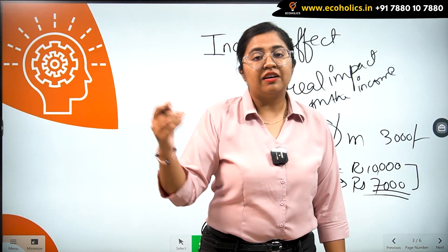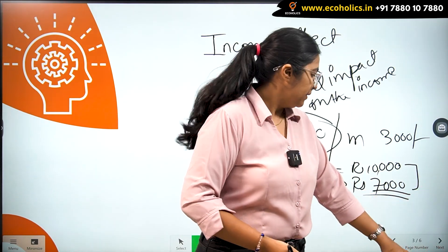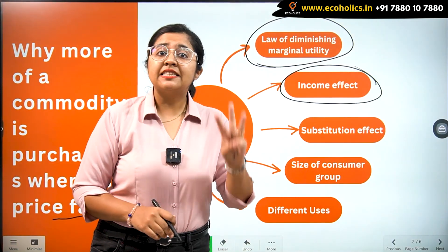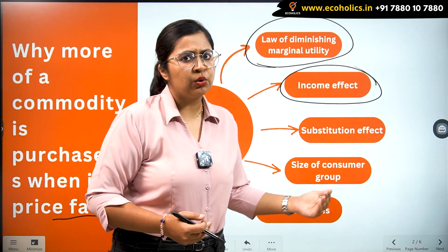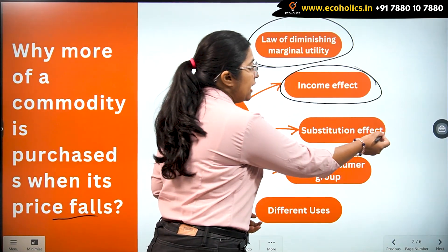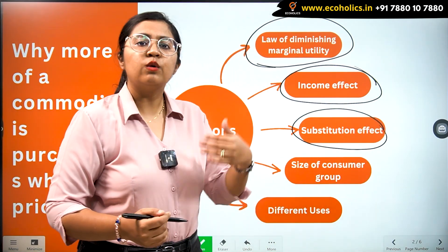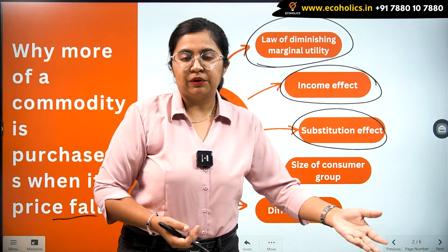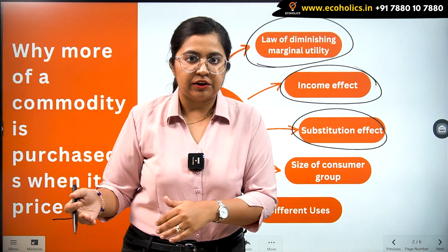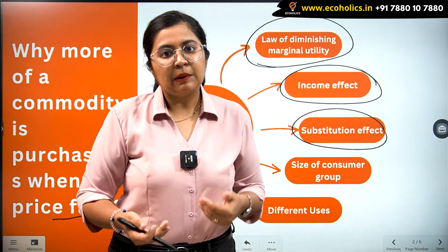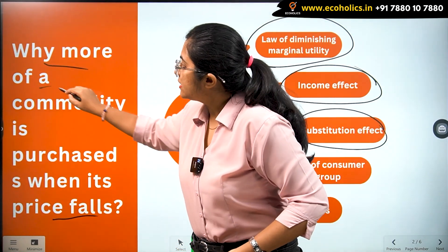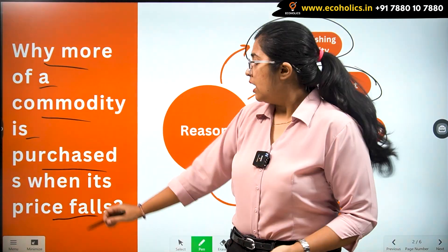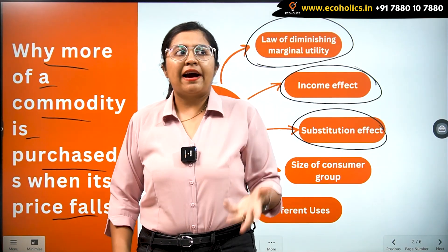This income effect gradually contributes to the downward slope of the demand curve. That's reason number two. Now for reason number three: the substitution effect. Substitution happens when a certain commodity becomes relatively cheaper compared to some other commodity because of a decrease in price. We said that more of a commodity is purchased when its price falls — let's apply this to tea.